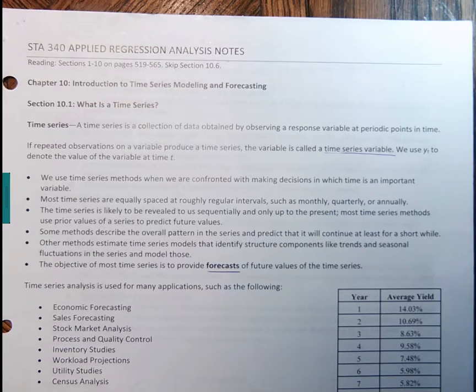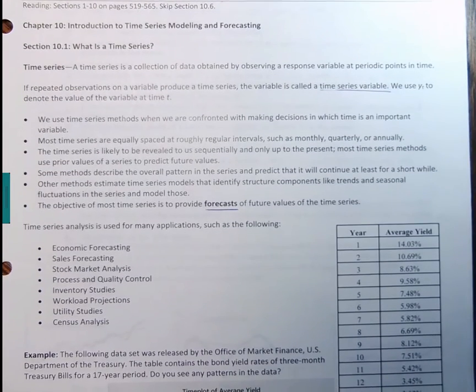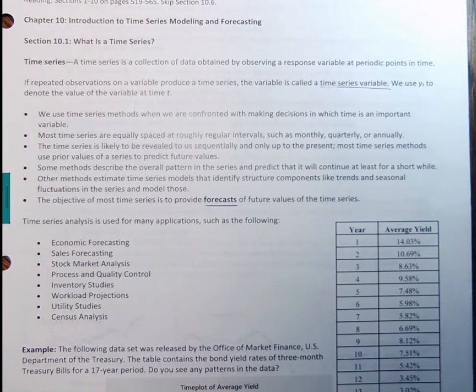In this note set, we're going to start looking at chapter 10. In particular, we're going to look at sections 10.1 and 10.2. Both of these sections are pretty short, so this video won't be too long. But in this chapter, we're going to talk about what are called time series. So time series is a collection of data that's been obtained by observing a response variable at periodic points in time.